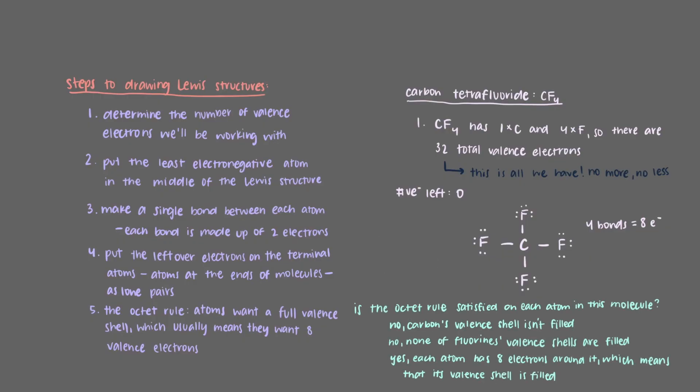Let's take a look at each of the fluorines. Each fluorine has 3 lone electron pairs, so 6 electrons around it, and 1 bond, so 2 more electrons, which adds up to 8 valence electrons so the fluorines are satisfied.